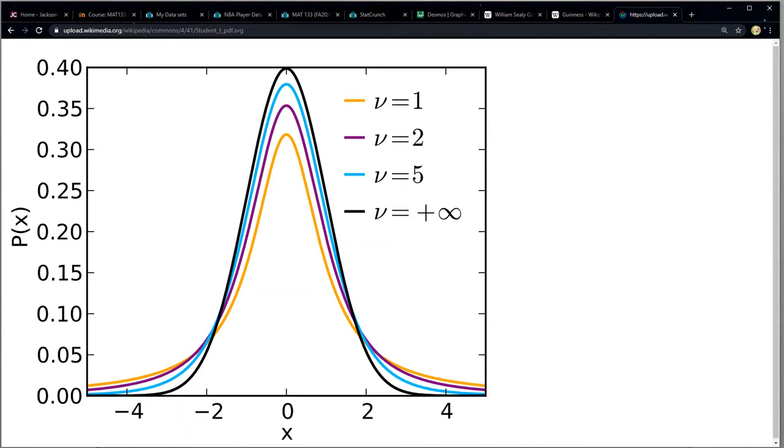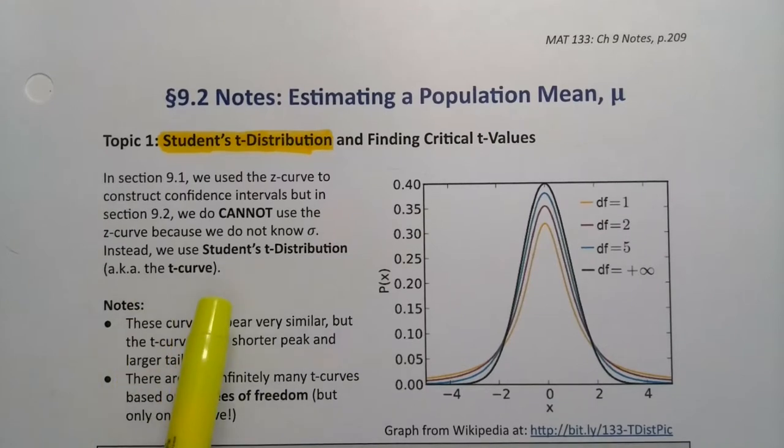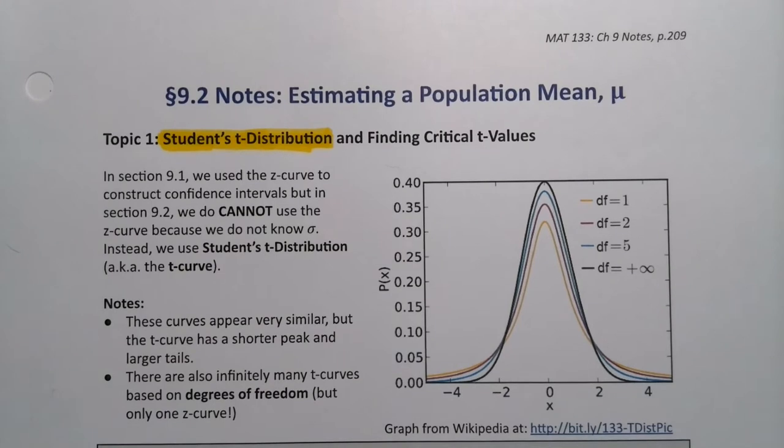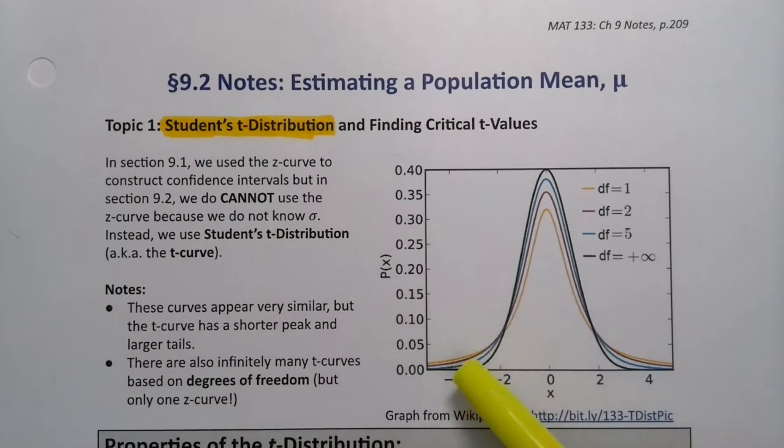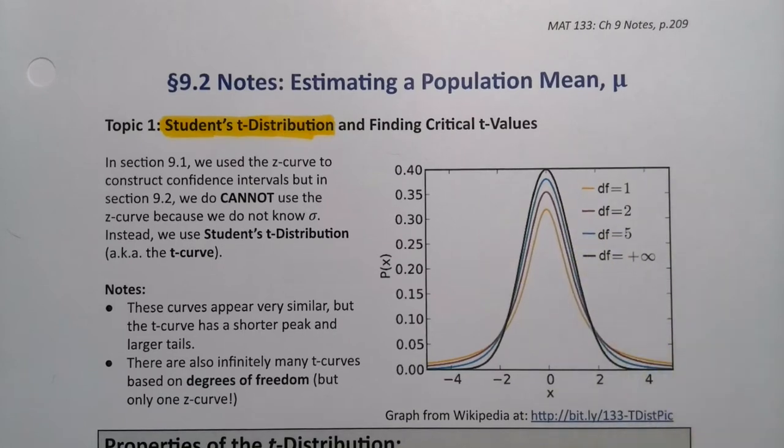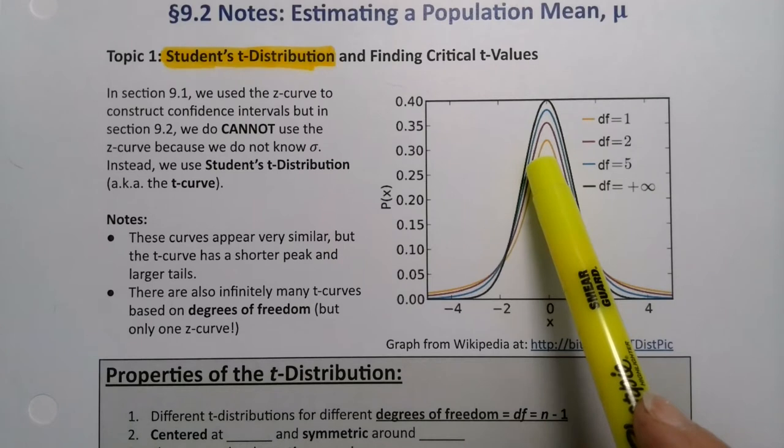That black one right there, that's the z curve. So what's happening is that Gossett noticed that you couldn't use the z curve because you don't know sigma, so you have to use his curve which is the t curve. The z curve is the best, it's the one we really wish we could use, it's that black curve right there.